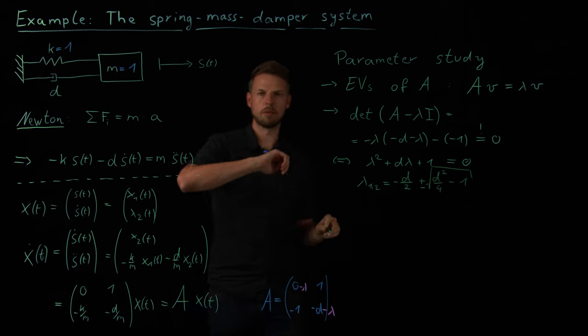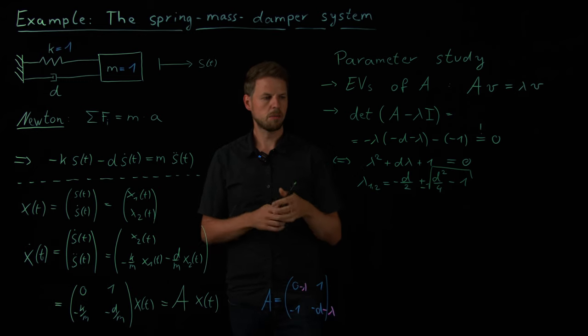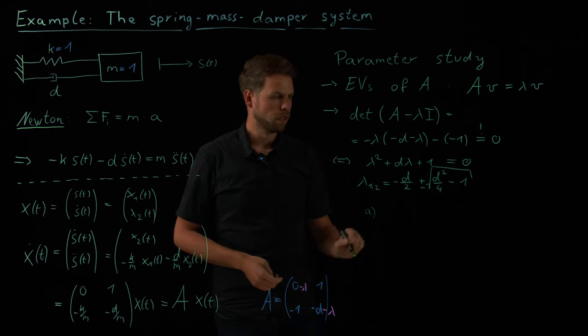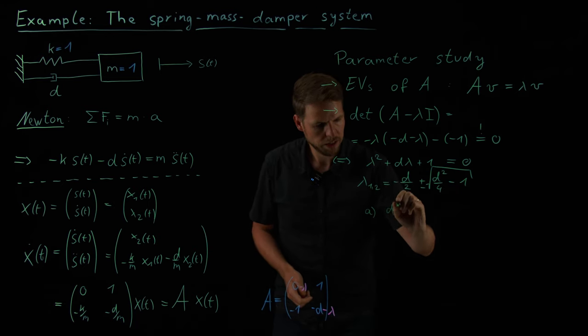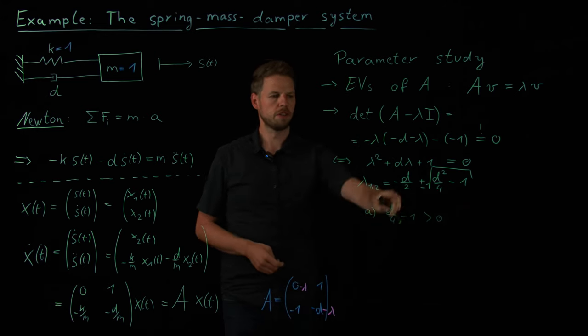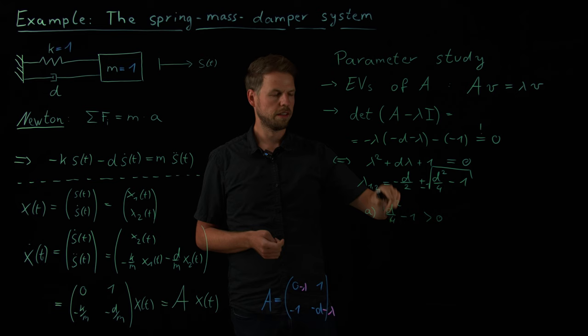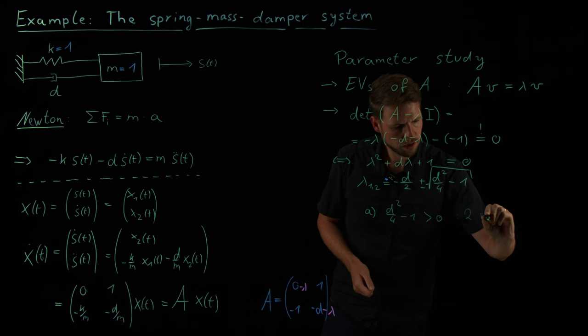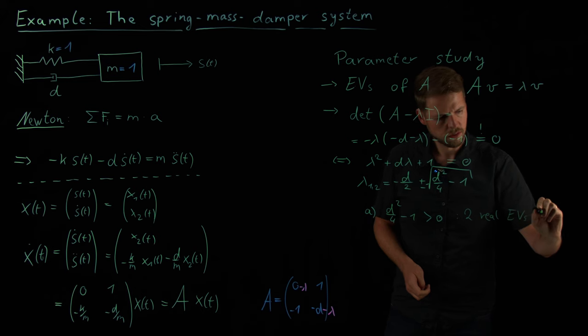Okay. And as I said, the eigenvalues are a bit abstract at this point. We will get to the point to see that these are really relevant and important to determine the system behavior. What we see now is we have three cases. We have case 1, where this entry is a positive number. So the d squared over 4 minus 1 is positive. This means we have d minus d half plus minus something that is in absolute value smaller than d half. So we will have two distinct real negative eigenvalues. So this gives me two real eigenvalues smaller than 0.